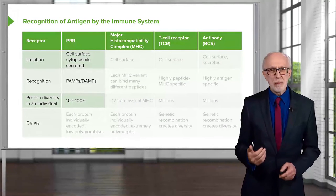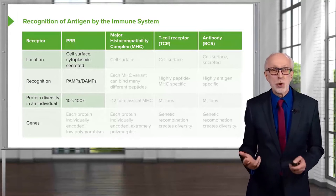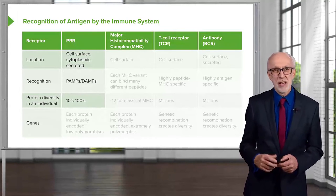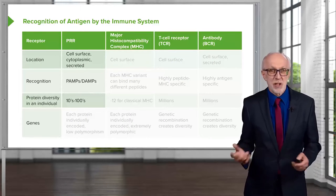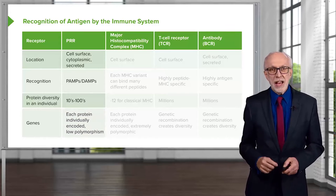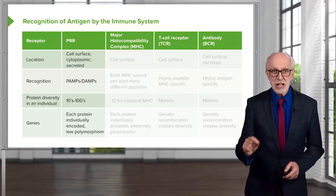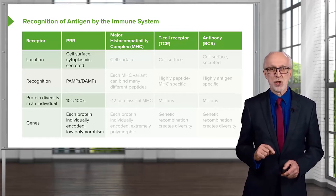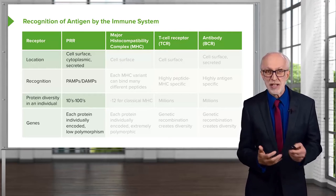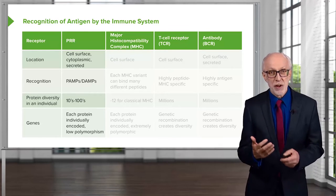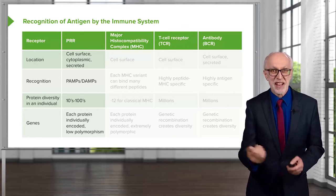We have maybe a few hundred of these — new ones are being discovered all the time. Let's say one or two hundred or so different pattern recognition receptors that we each possess. Each of these is individually encoded by a gene, so for each pattern recognition receptor we have a different gene. And they are not very variable from one individual to another.